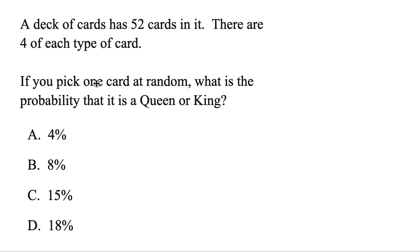This time, if you pick one card at random, what is the probability that it's either a queen or a king? But it's a probability we'll put our fraction. And this time, the deck of cards, it has 52 in it. So that is the total or the bottom number.